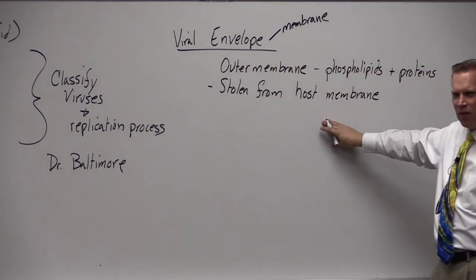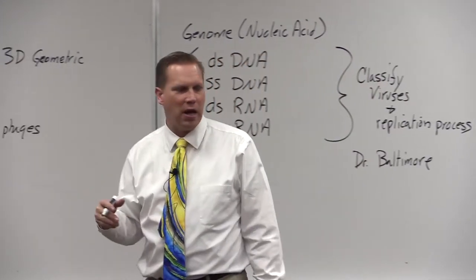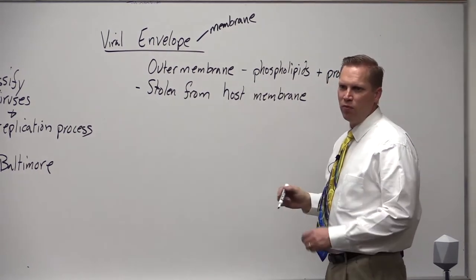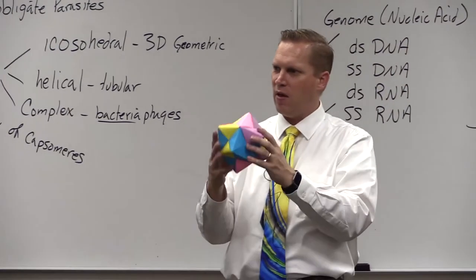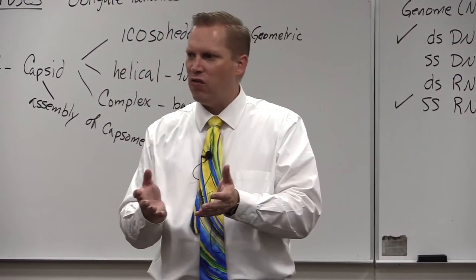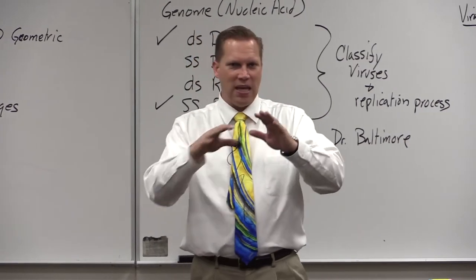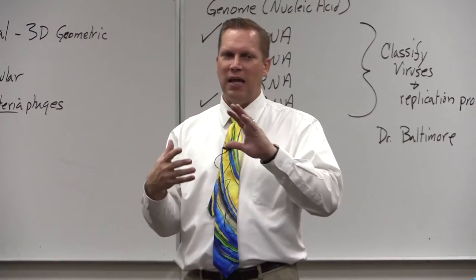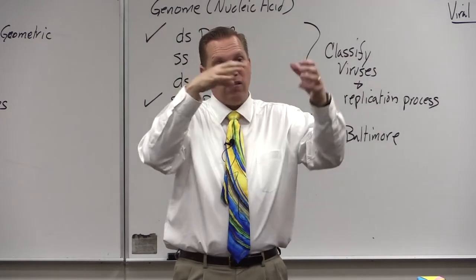The viral envelope is usually stolen from host membrane. Depending on the specific life cycle of the virus, that host membrane might be coming from the endoplasmic reticulum membrane or sometimes the plasma membrane. The purpose of the membrane is often to protect that virus from the immune system of its host. You can think of it as the classic wolf in sheep's clothing — the virus encases itself in plasma membrane from the cell itself, so as it travels through the body it looks like another cell.